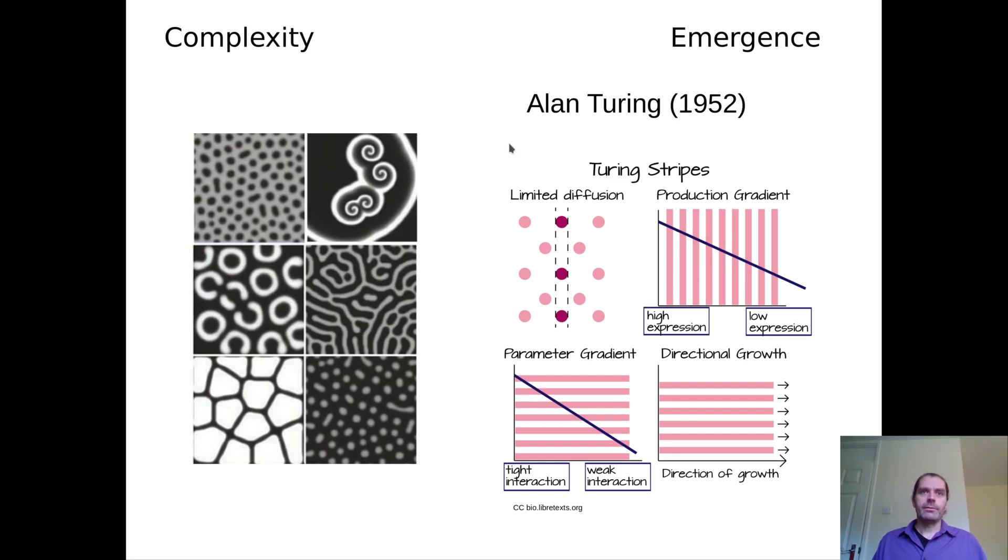So what's important about that? First of all, what we see is that we have a very simple model that can explain many biological patterns. But second of all, and more importantly, we have a homogeneous system. So we have a system without any patterns in it, and consisting only of identical elements that spontaneously generates structure. And that is called emergence, this type of phenomenon.